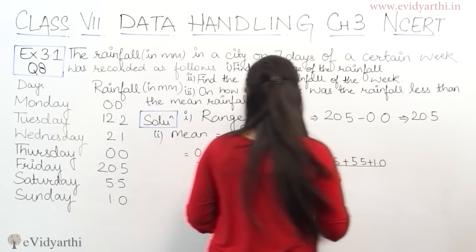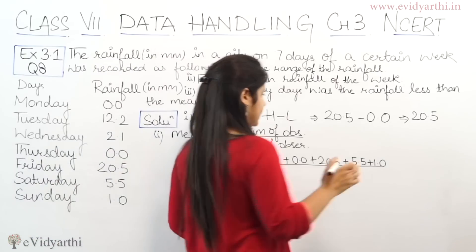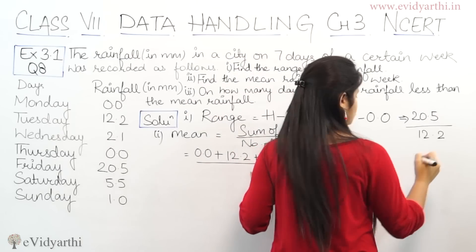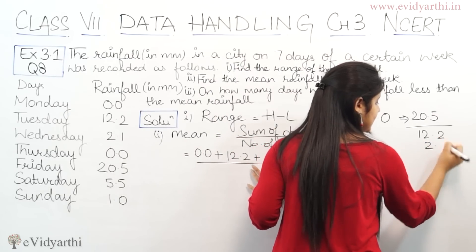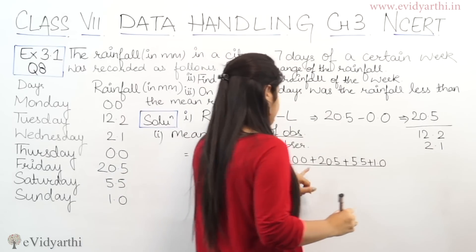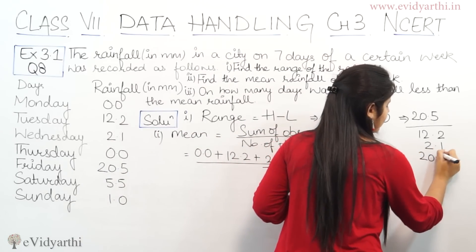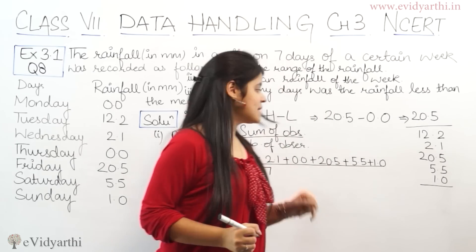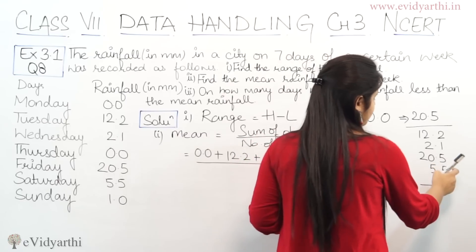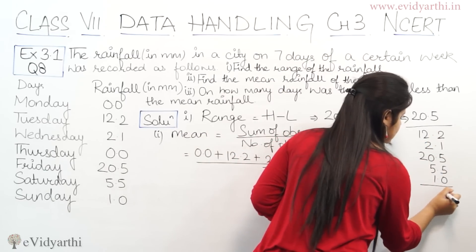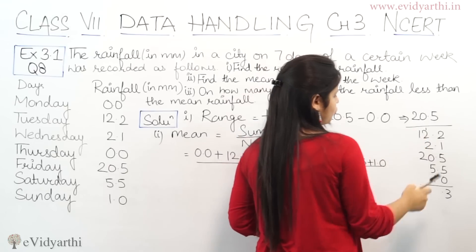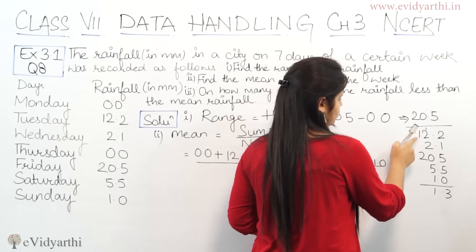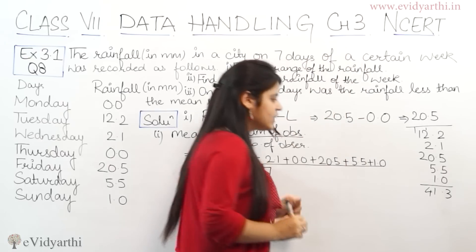Now let's add these up. They are in decimals, so we have to be careful. Starting with 12.2 plus 2.1, keeping decimal places aligned. Then we add 20.5, then 5.5, and then 1.0. Adding all values together: 5 plus 5 is 10, carry 1 — giving 13 in the ones column; working through the full addition, in all we get 41.3.